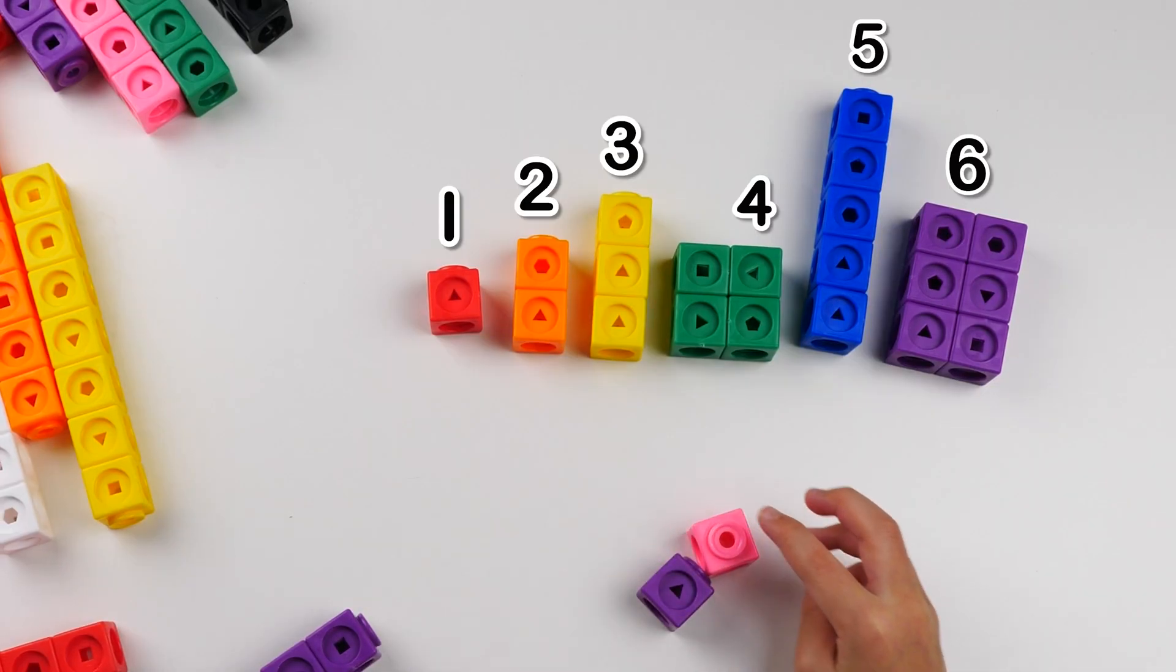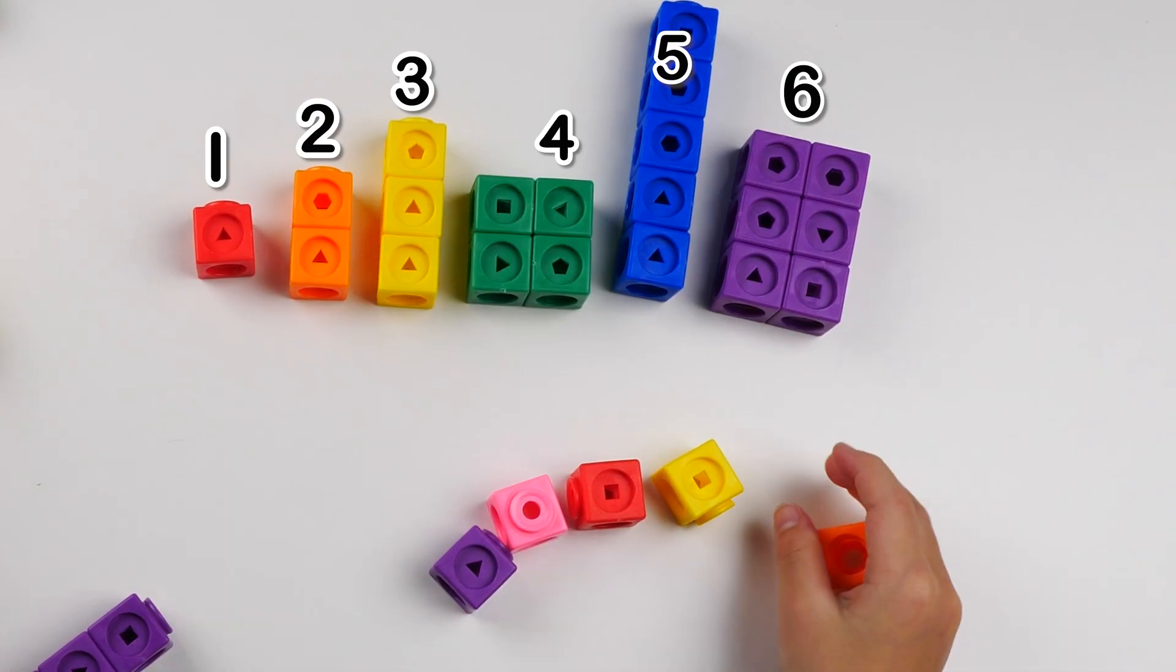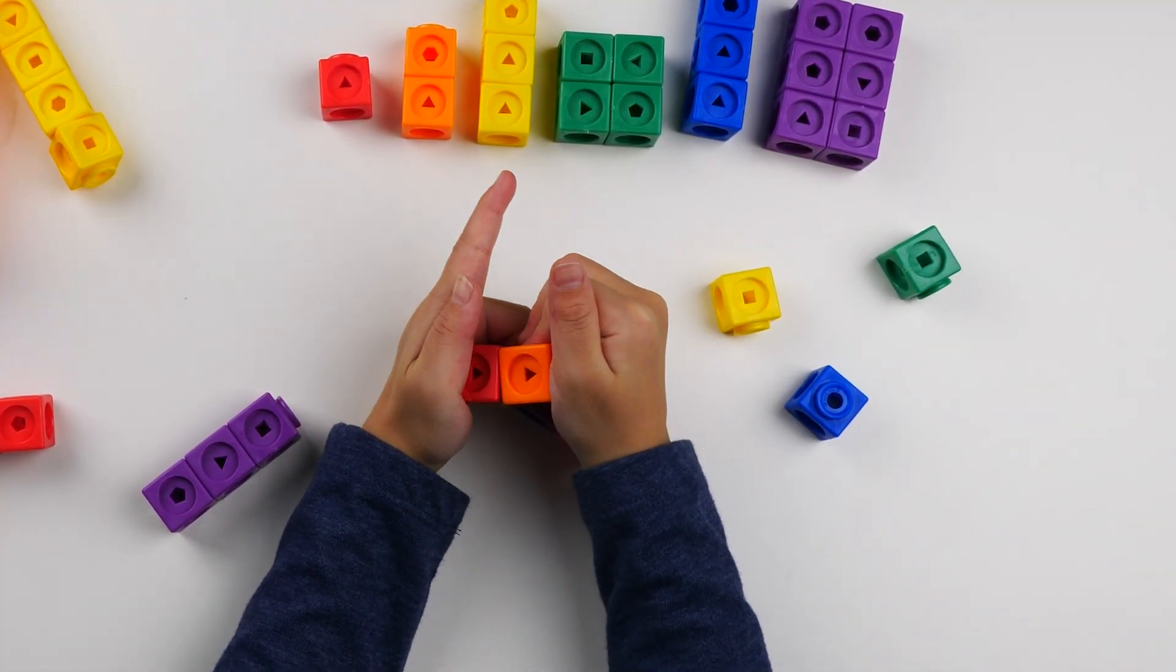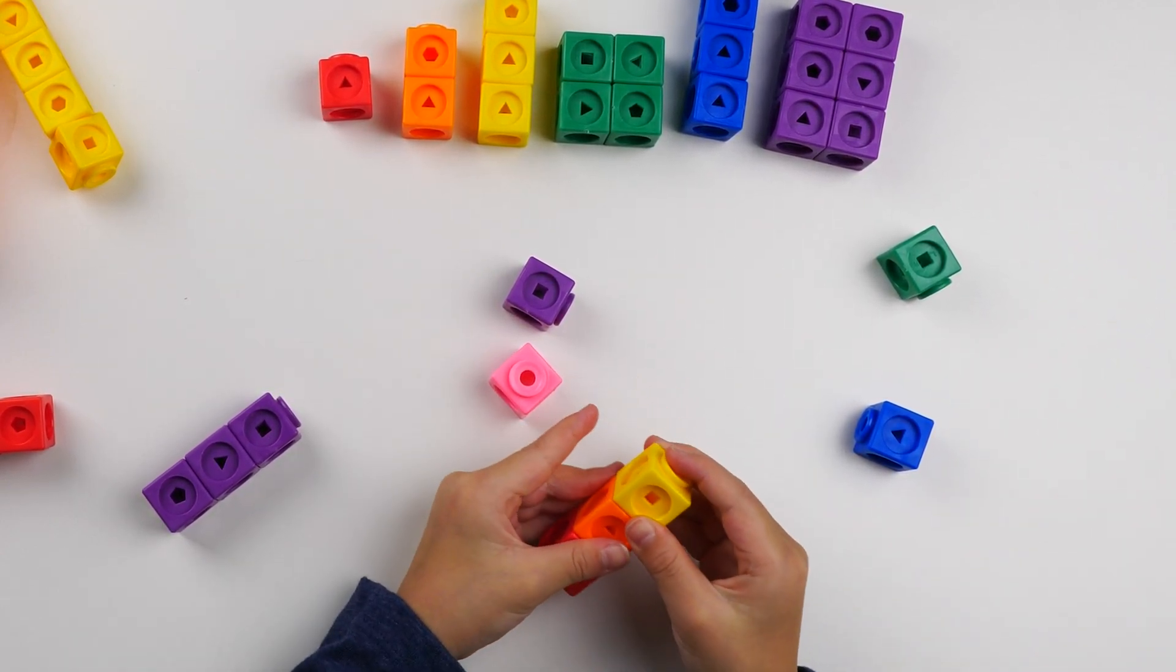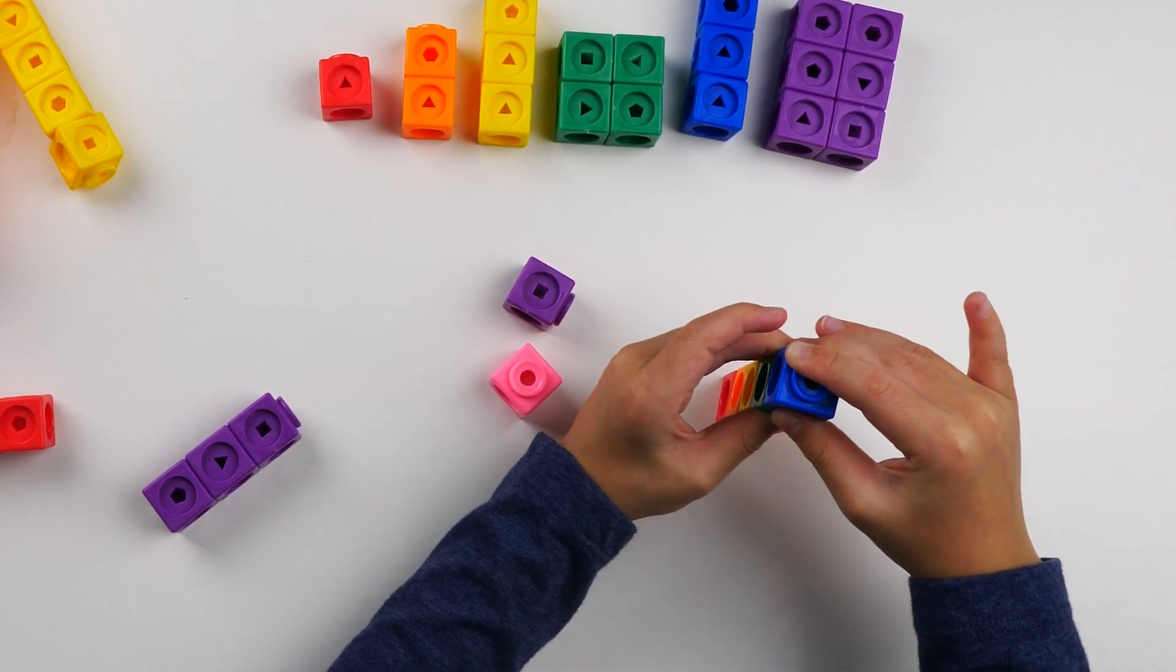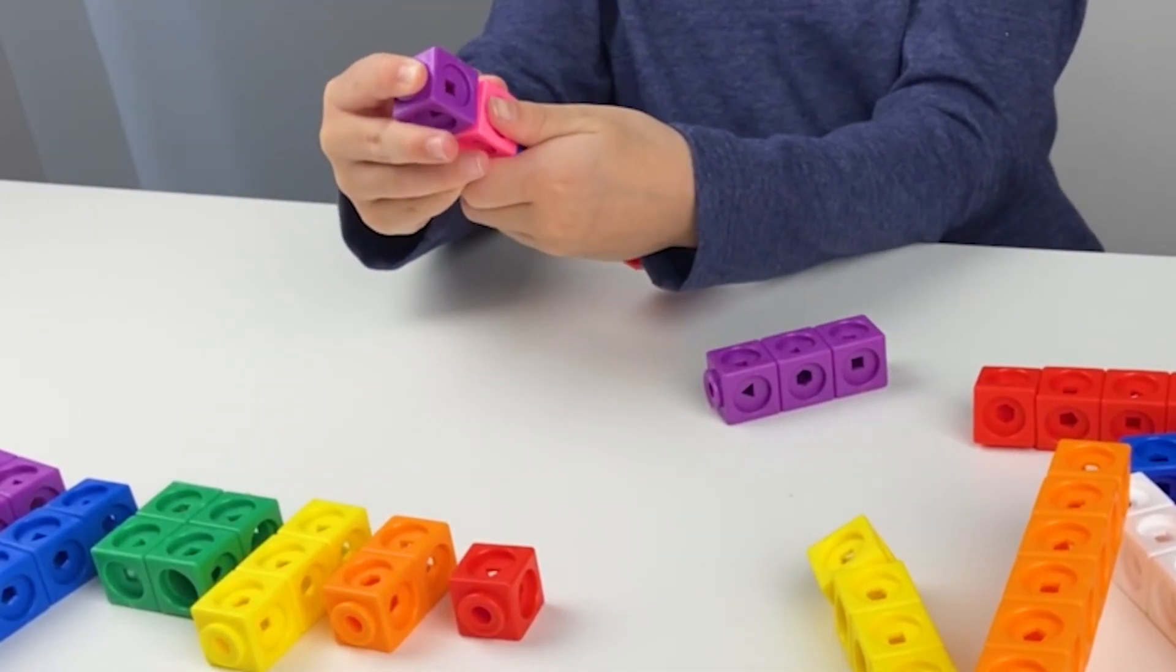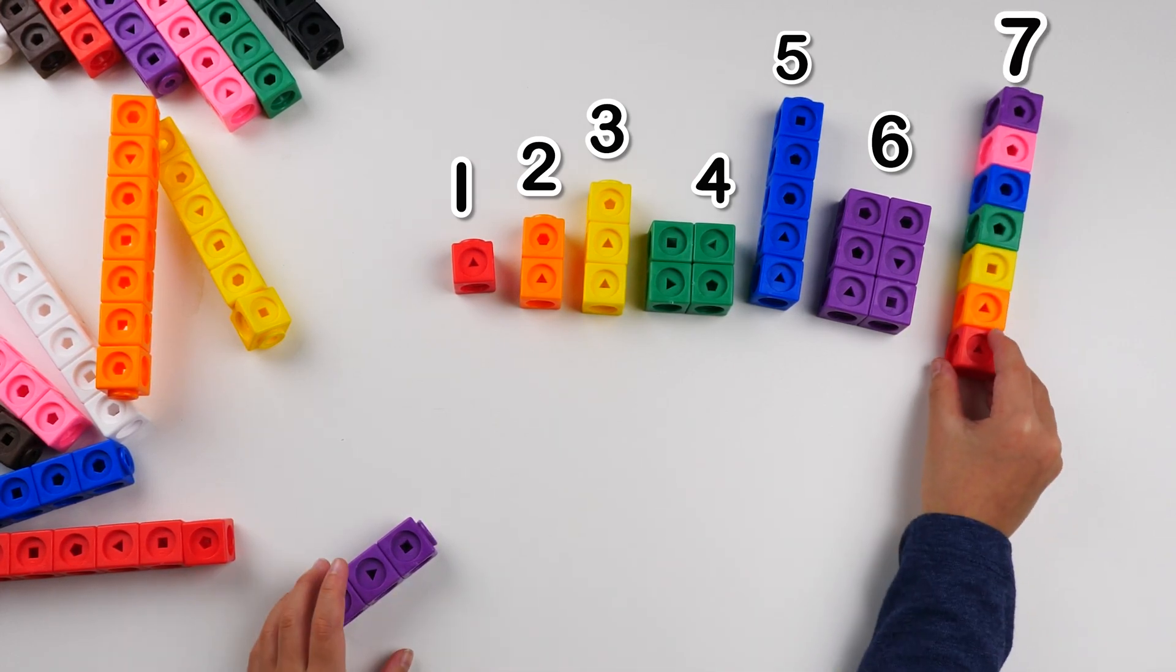Now I need to make 7. I think I need 1 of each color for it to make 7. Alright, red, orange, yellow, green, blue, pink, and purple. Wow! Here is number block 7.